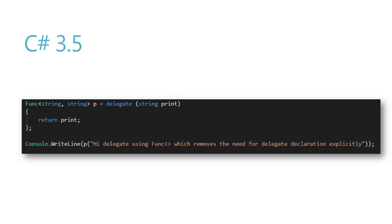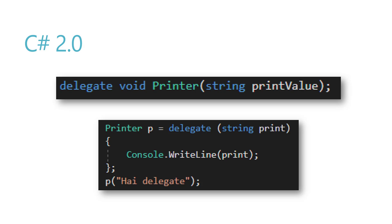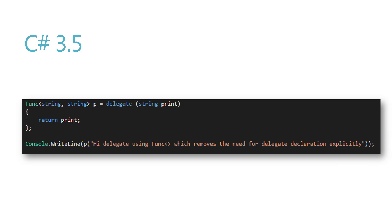Previously we were declaring a delegate and performing all operations using that. But now C# has removed the delegate declaration itself, using what is called the Func delegate. You can pass a type — the first string is the parameter, and the last string in any Func is always TResult, which is the output — essentially an out parameter type. You can also use a lambda expression to do the same operation.